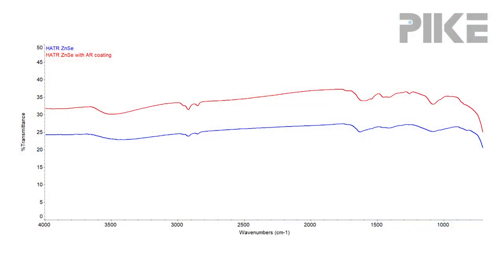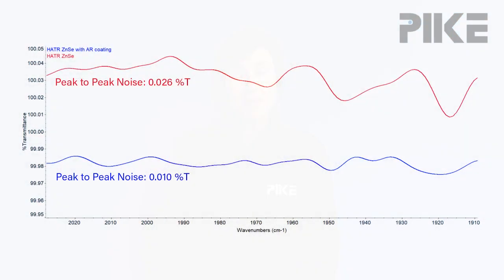In this example, by coating the ends of the crystal where the beam comes in, we've increased the energy throughput by roughly about 12 percentage points. In terms of peak-to-peak noise, which affects your signal-to-noise ratio, we have a 100% decrease in our noise. Now for a lot of applications, you're not working down in the weeds of that noise anyway, but for those who are really pushing the limits of the sensitivity of their HATR, coating the crystal might just be what you need. Thanks for watching and we'll see you next time.